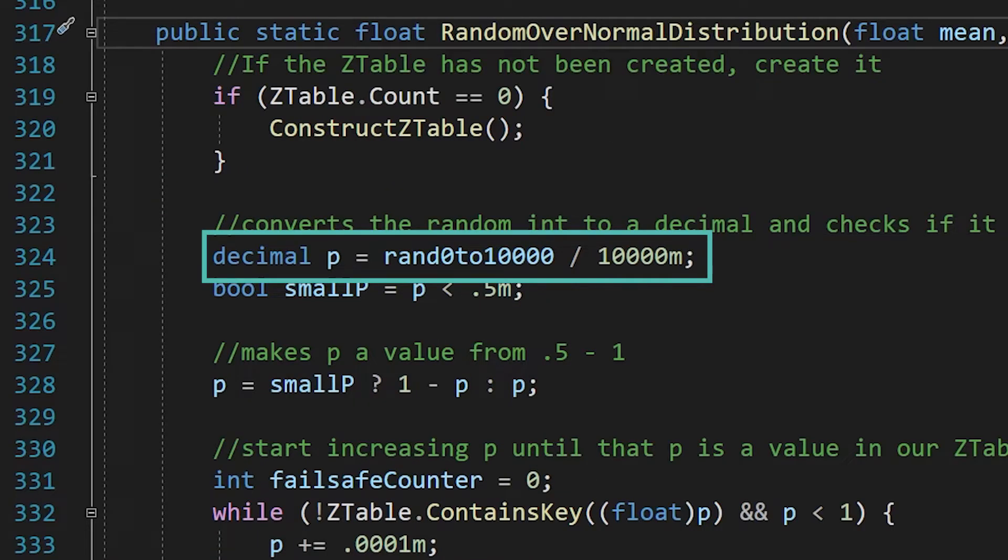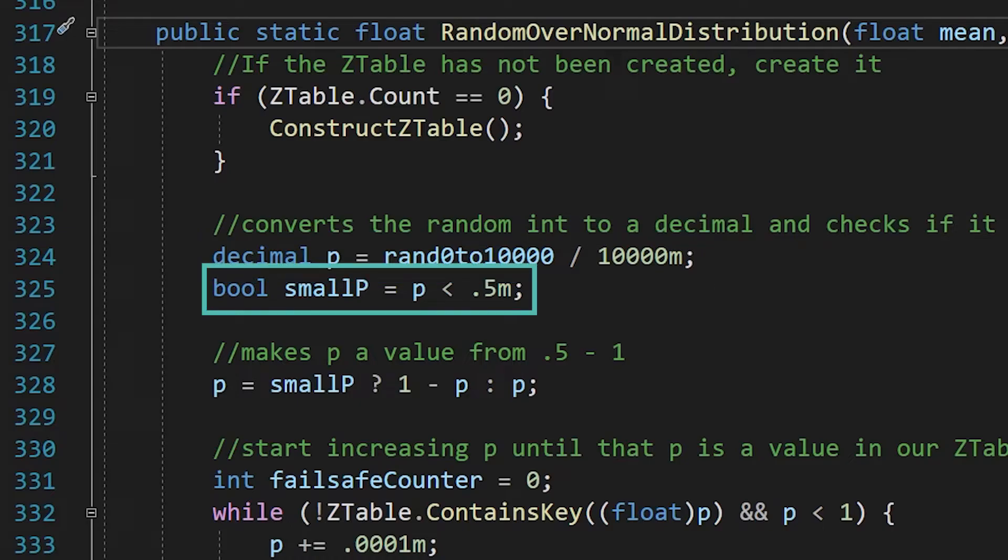Next we convert our random number from 0 to 10,000 we put in as the argument into a decimal. Then we check to see whether the p is less than 0.5. If it is, we set p equal to 1 minus p to get a value greater than 0.5. I'll explain why we did this in a little bit.